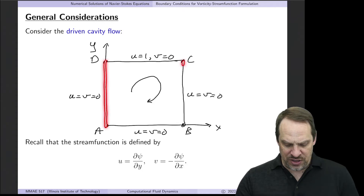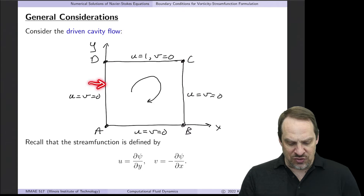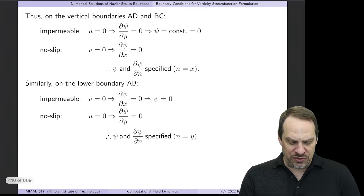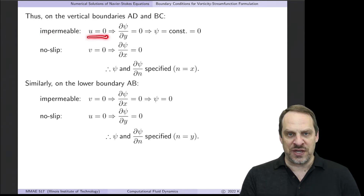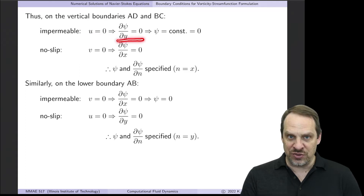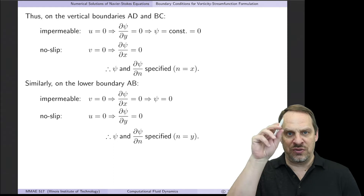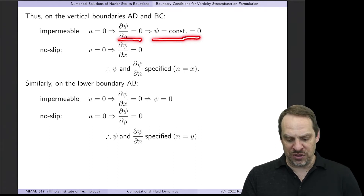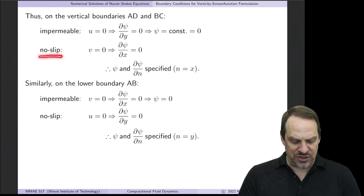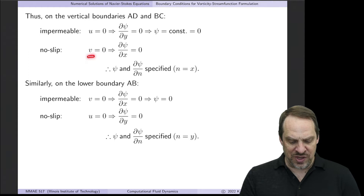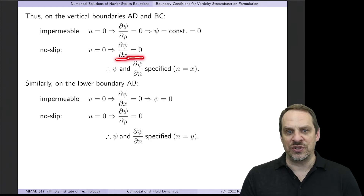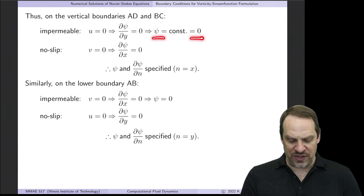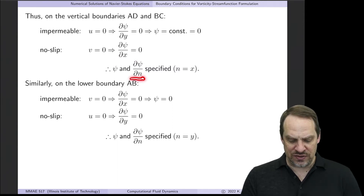I'll start by looking at the left and right boundaries — the two vertical boundaries. In that case, the normal velocity is u. The impermeability condition requires that u, the normal velocity, is zero, but u is ∂ψ/∂y, so that equals zero. Integrating along the vertical boundary with respect to y, ψ is a constant, and we can set that constant to zero. The no-slip condition means the tangential velocity v is also zero. Since v is −∂ψ/∂x, we have ∂ψ/∂x equal to zero. So we end up with both a Dirichlet boundary condition for ψ and a Neumann boundary condition — both ψ and ∂ψ/∂n are specified.